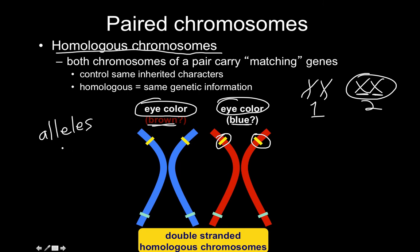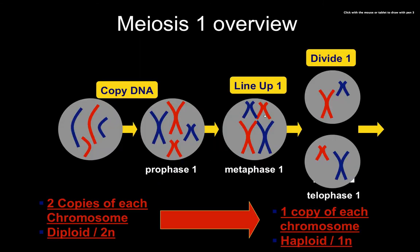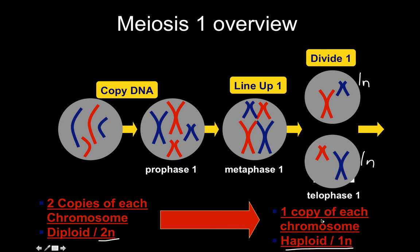Meiosis happens in two basic steps. In the first step, a diploid cell undergoes DNA replication, the DNA lines up, and then we divide once. After that division, we have one copy of the blue chromosome and one copy of the red chromosome in each cell — so each resulting cell is haploid, or 1n. We start with two copies of each chromosome — a diploid cell — and by the end of meiosis one we have two haploid cells.